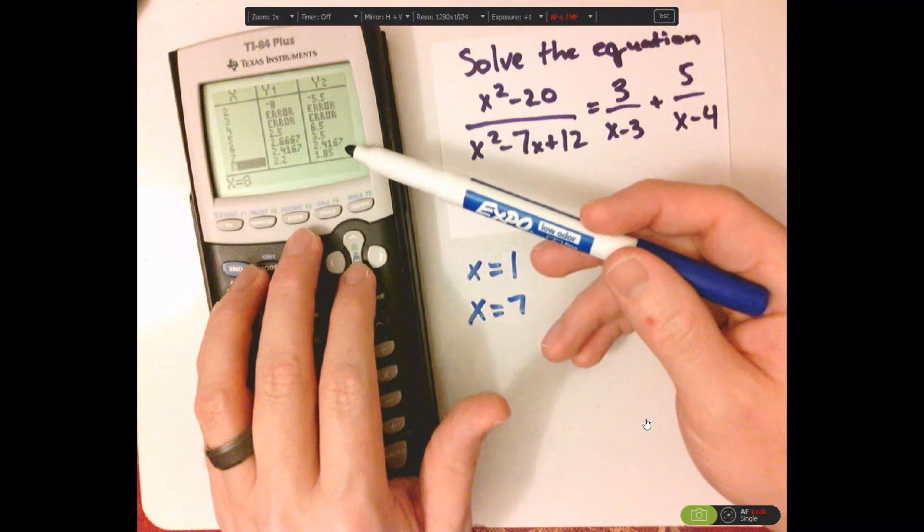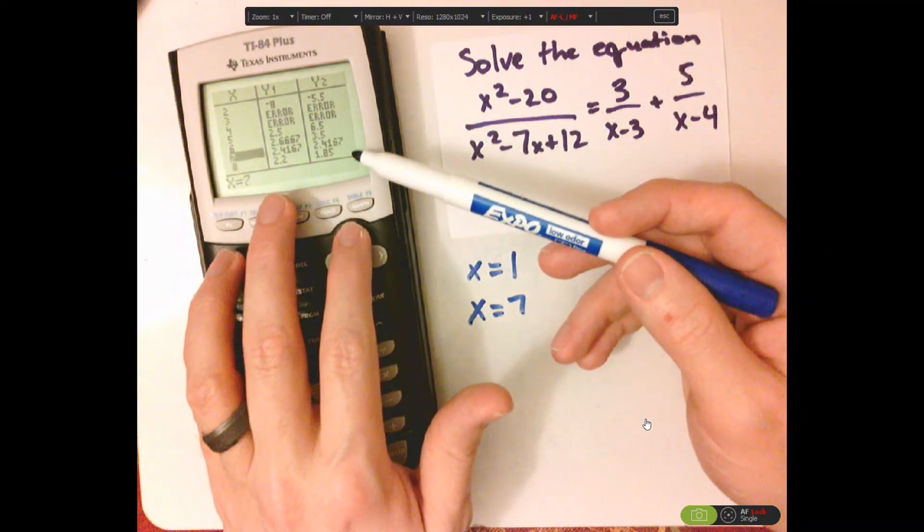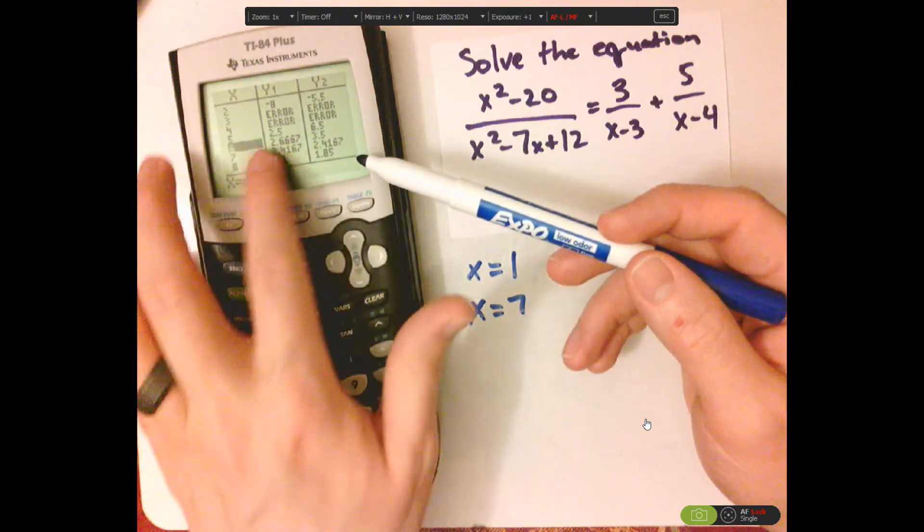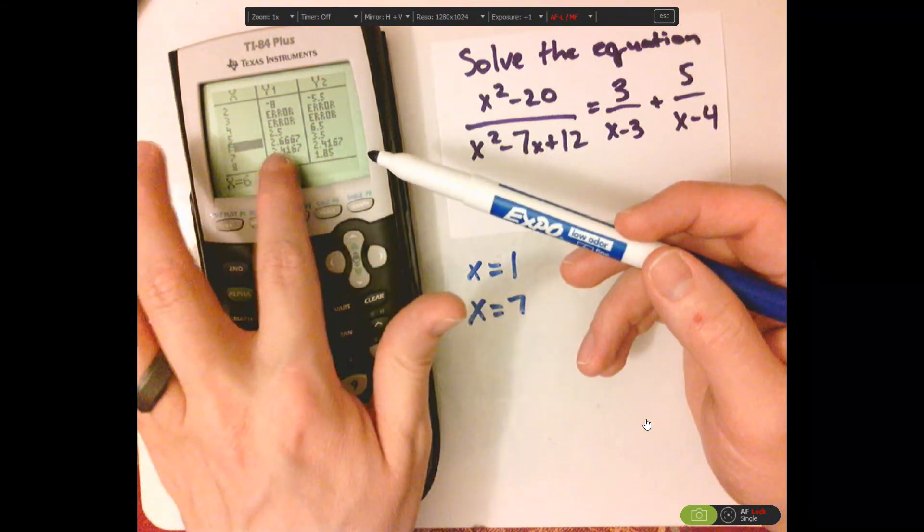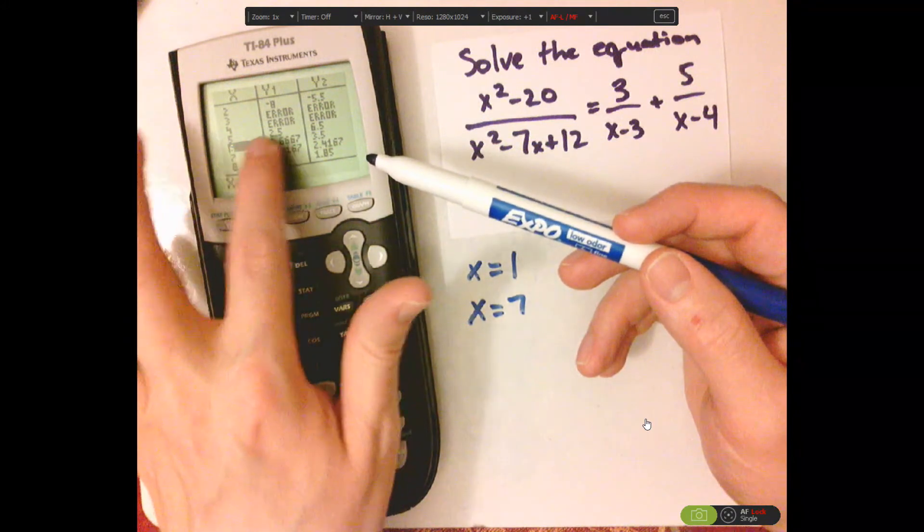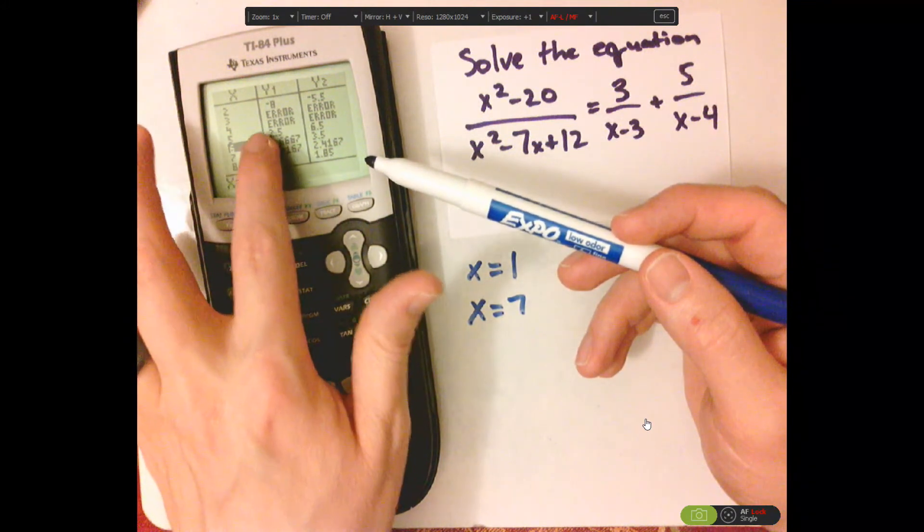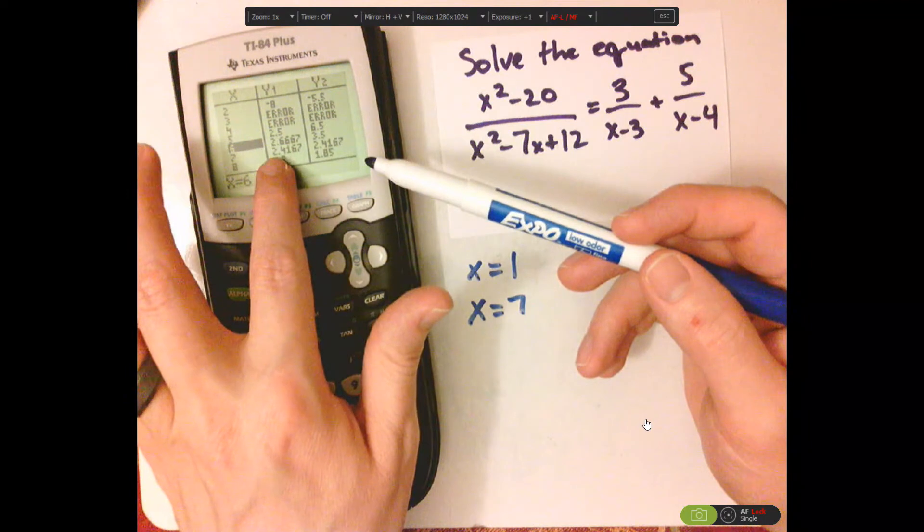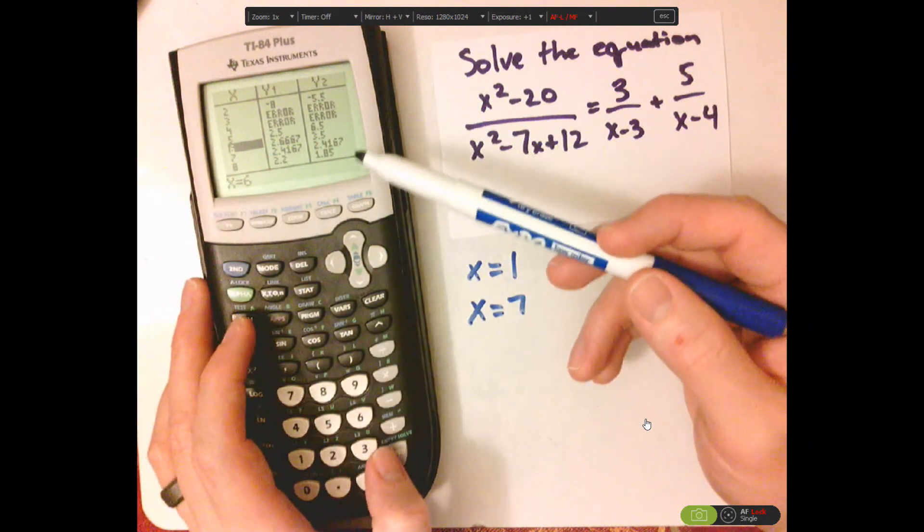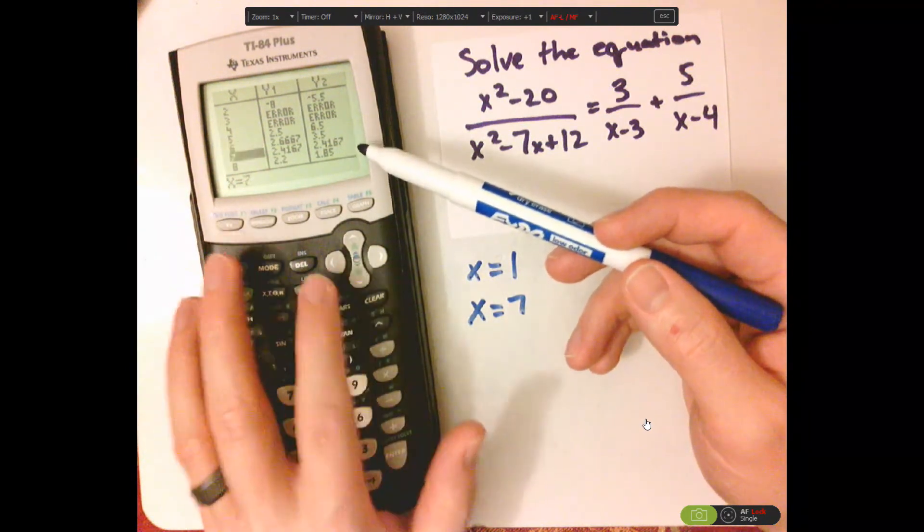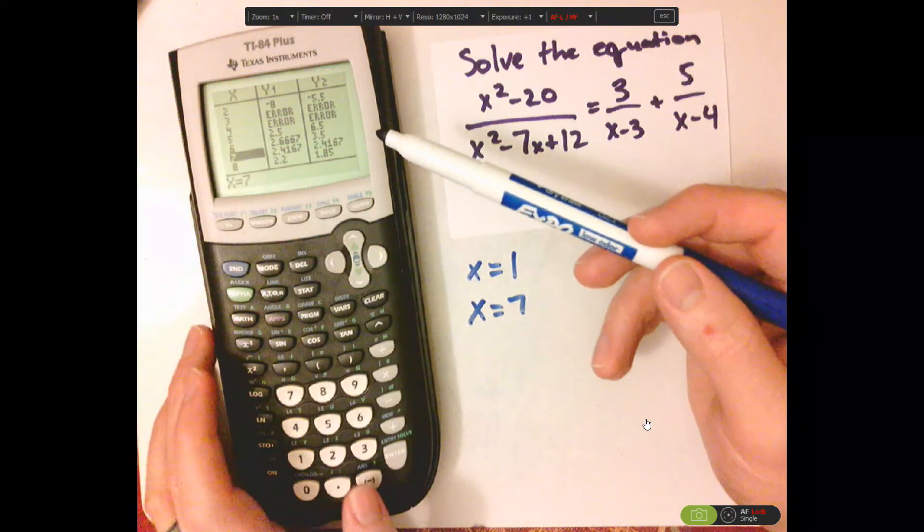See if they're getting close to each other, and they are. See how they get, this one's going down. This one's going down. Down, it goes a little up, and then down. But, you see, at 7, they're equal to one another.